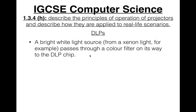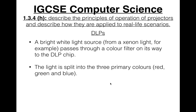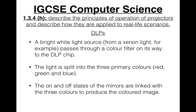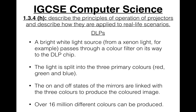A bright white light source — from a xenon light, for example — passes through a colour filter on its way to the DLP chip. The light is then split into three primary colours: red, green, and blue. The on and off states of the mirrors are linked with the three colours to produce the coloured image. Over 16 million different colours can be produced.